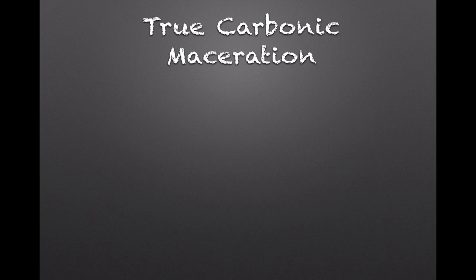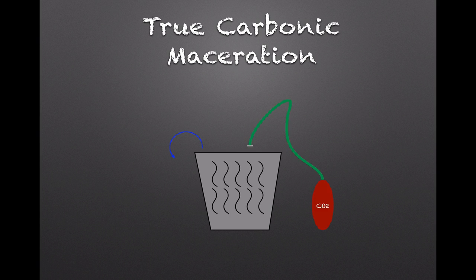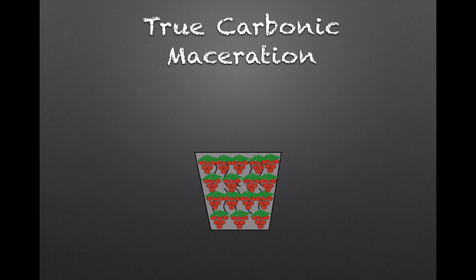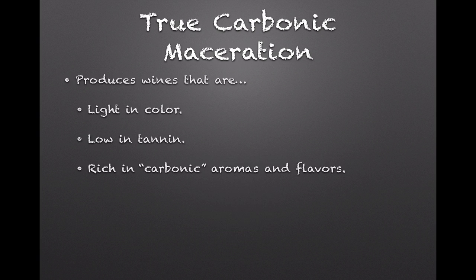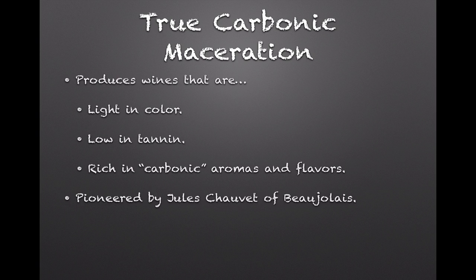So if that's semi-carbonic maceration, what would a true carbonic maceration be? You start with a container and fill it with CO2, which flushes all the oxygen out. Then you add whole clusters of grapes carefully to avoid crushing any berries and releasing juice. The container is then sealed, and ideally all of the grapes will undergo intracellular fermentation. After that's complete, the grapes can be pressed and the juice undergoes conventional fermentation. A true carbonic maceration produces very lightly colored wines with few tannins because none of the juice has had conventional contact with grape skins, but the carbonic flavors and aromas are even more pronounced than in a semi-carbonic treatment. This process was pioneered by winemaker and natural wine proponent Jules Chauvet from Beaujolais.